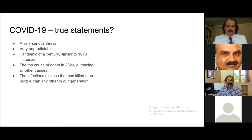Based on what we know so far: indeed, it is a very serious threat — there's no doubt about it. Indeed, it is very unpredictable. However, the person-years lost with COVID-19 to date are about one-thousandth compared to the 1918 influenza. Smoking will kill another 9 million people this year, compared to close to half a million so far with COVID-19, but those COVID deaths are in people who are on average 80 years old.